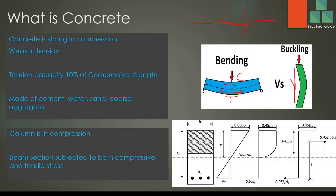We provide reinforcement to increase the capacity of columns when the concrete alone cannot carry the load. We may provide nominal reinforcement, or to enhance column capacity, we provide reinforcement as required based on the axial load applied. Apart from that, when beams are loaded, we definitely have to provide reinforcement according to the beam's action.